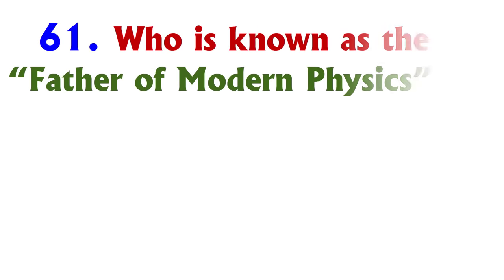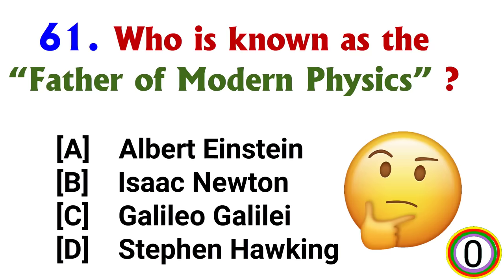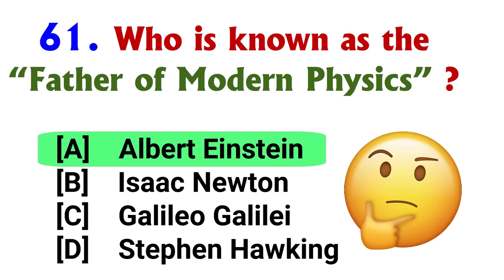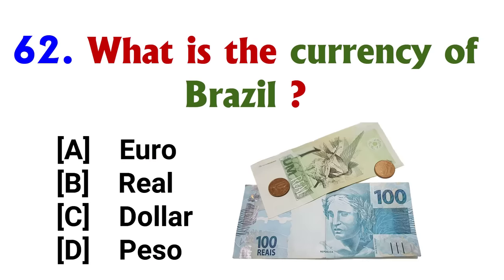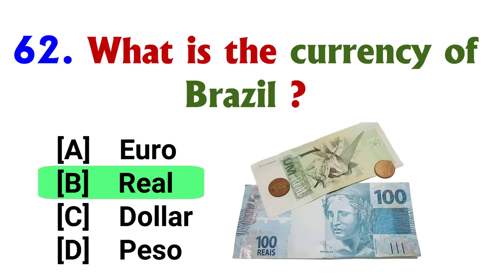Who is known as the father of modern physics? Answer: option A, Albert Einstein. What is the currency of Brazil? Answer: option B, Real.